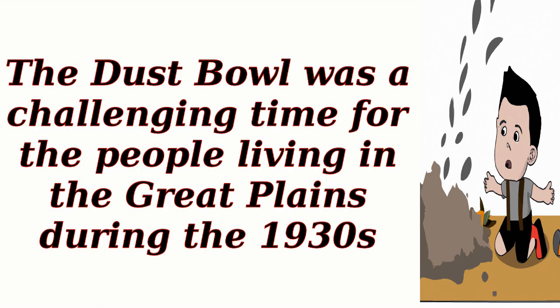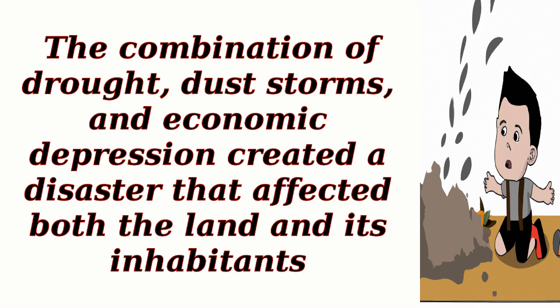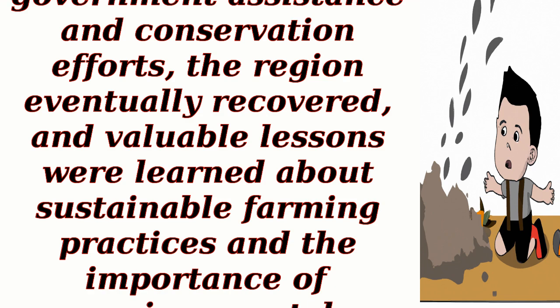The Dust Bowl was a challenging time for the people living in the Great Plains during the 1930s. The combination of drought, dust storms, and economic depression created a disaster that affected both the land and its inhabitants. However, through government assistance and conservation efforts, the region eventually recovered, and valuable lessons were learned about sustainable farming practices and the importance of environmental stewardship.